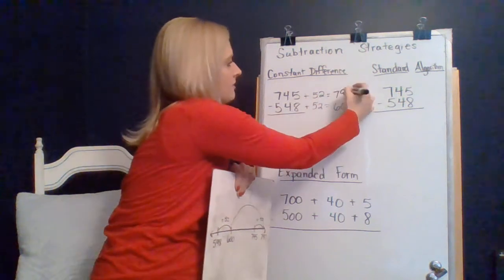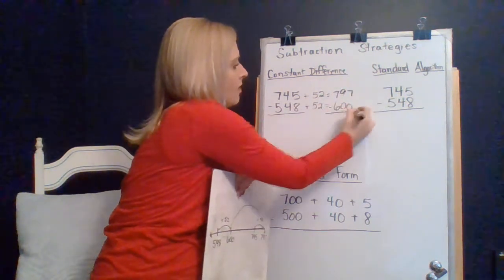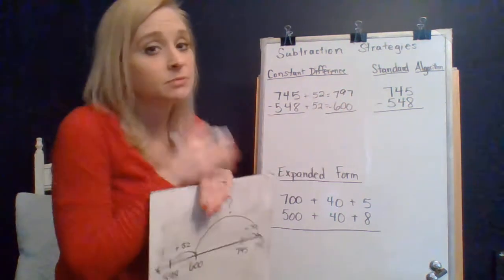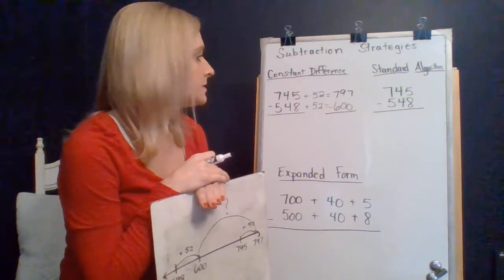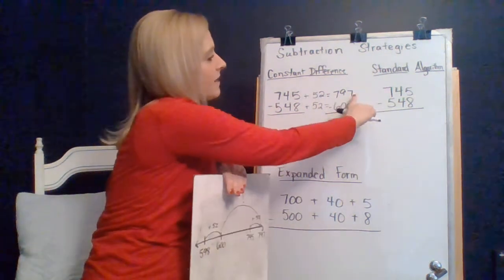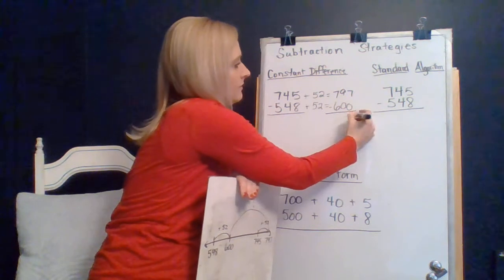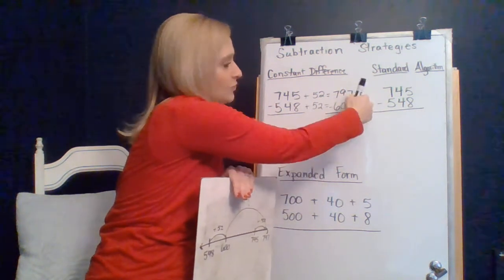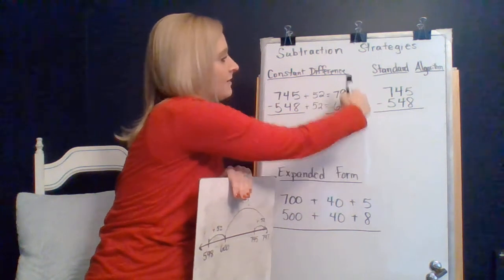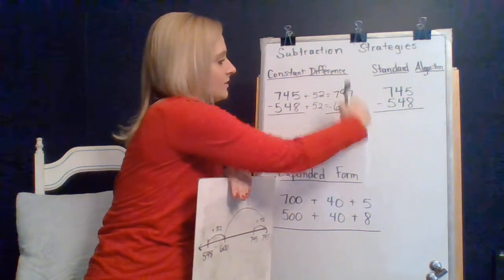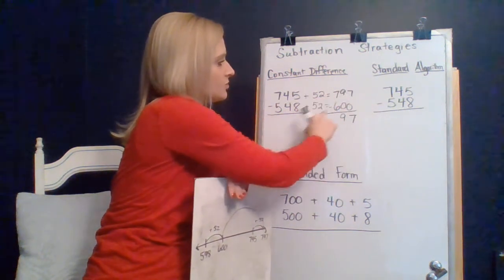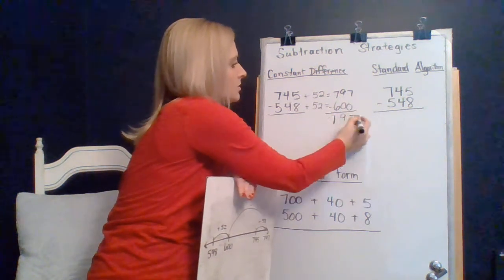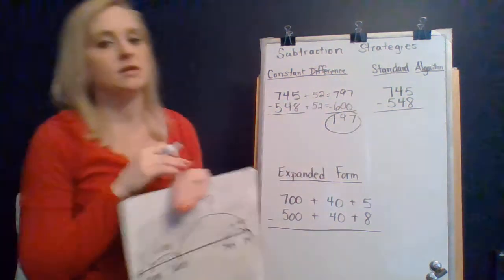And now I have a much more simpler problem to subtract. So I have 7 minus 0 is 7, 9 minus 0 is 9, and 700 minus 600 is 100. So my answer to this is 197.